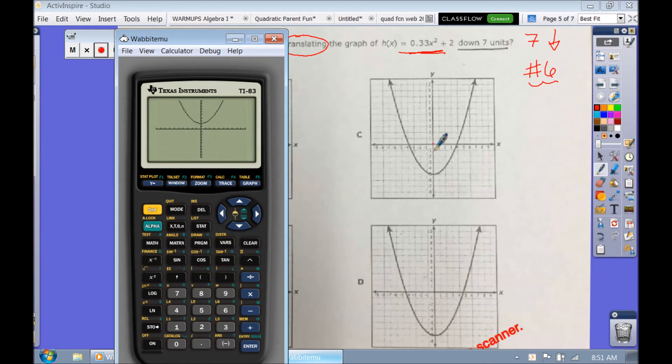And so I know it's going to be either C or D. And it looks like D is a little too far below. So our answer is C.